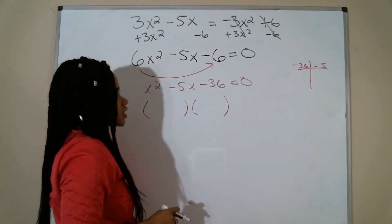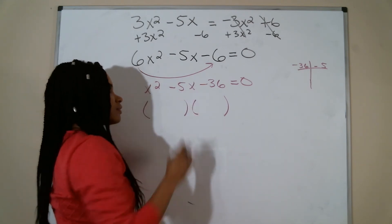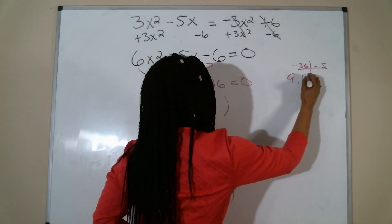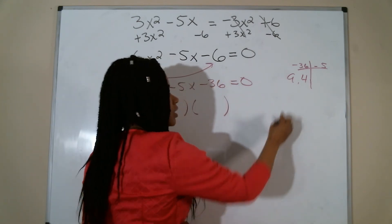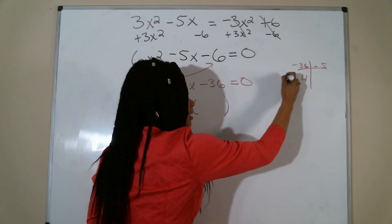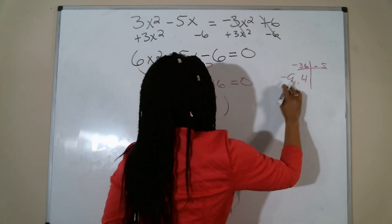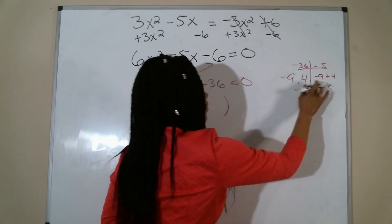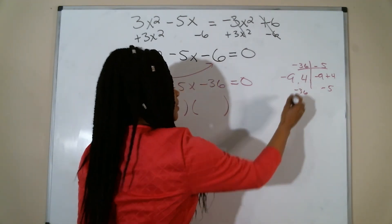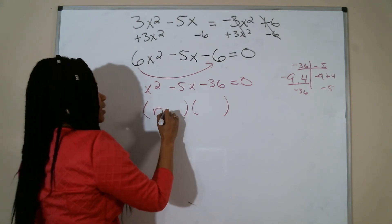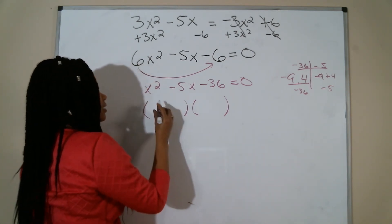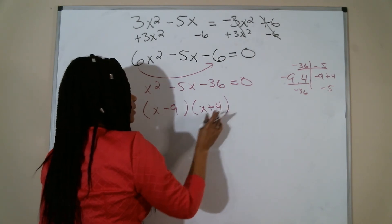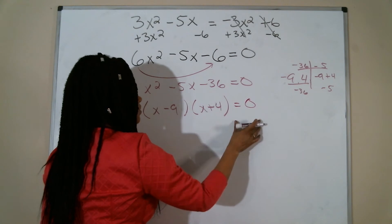So factors of negative 36, but when I add them, I get negative 5. 6 and 6, that will not work. 9 and 4. If I use 9 and 4, one of them has to be negative because I want a negative 36. The 9 should be negative because when I add it, I want a negative 5. So negative 9 times 4 is negative 36, but when I add it, I do get negative 5. So my factors are negative 9 and 4. So x minus 9 and x plus 4.